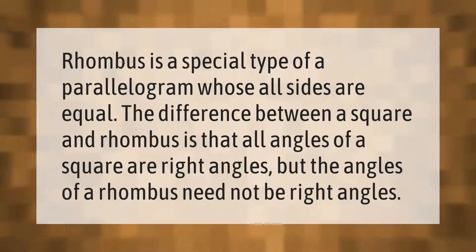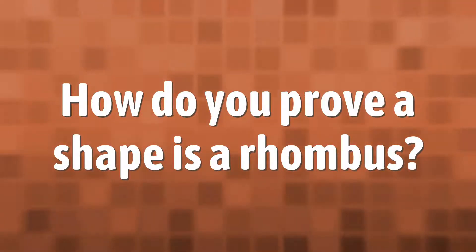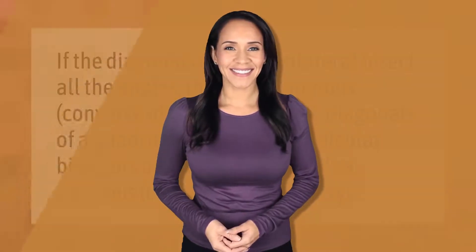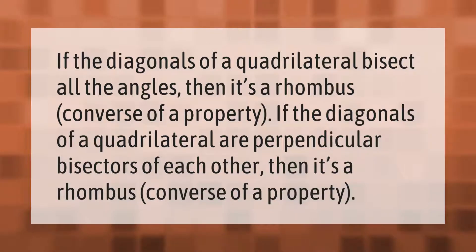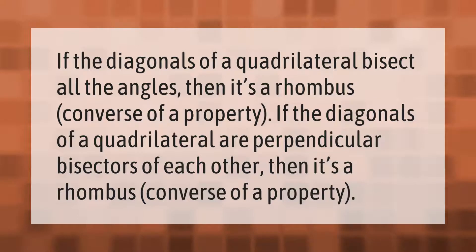If the diagonals of a quadrilateral bisect all the angles, then it's a rhombus — converse of a property. If the diagonals of a quadrilateral are perpendicular bisectors of each other, then it's a rhombus — converse of a property.